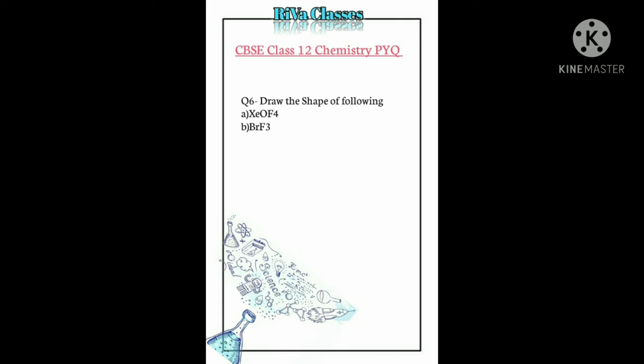Question number six: Draw the shape of the following compounds — (a) xenon oxyfluoride (XeOF₄) and (b) bromine trifluoride (BrF₃). The geometry of xenon oxyfluoride is square pyramidal, and bromine trifluoride is T-shaped.